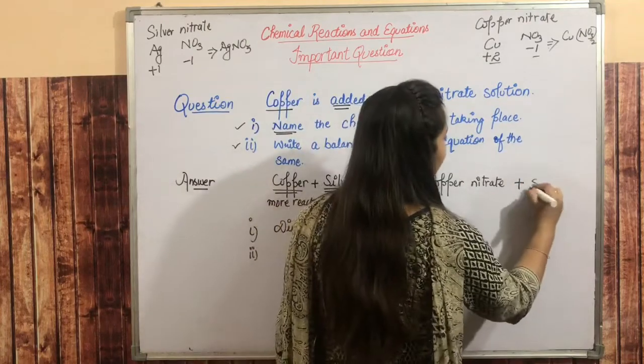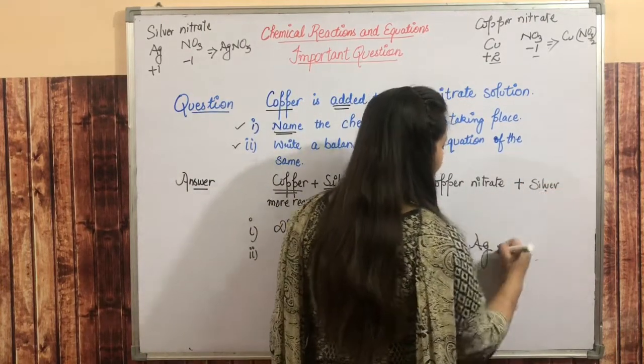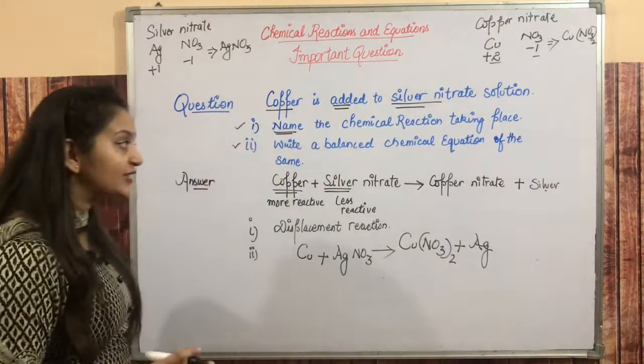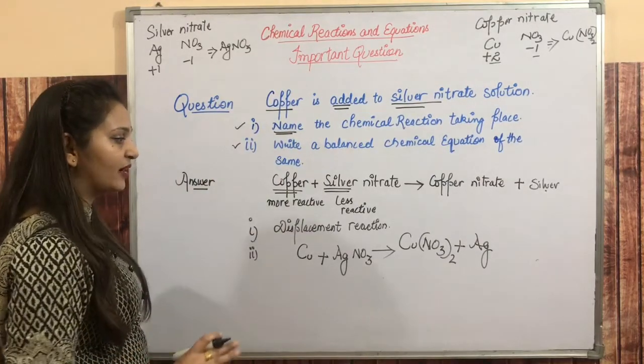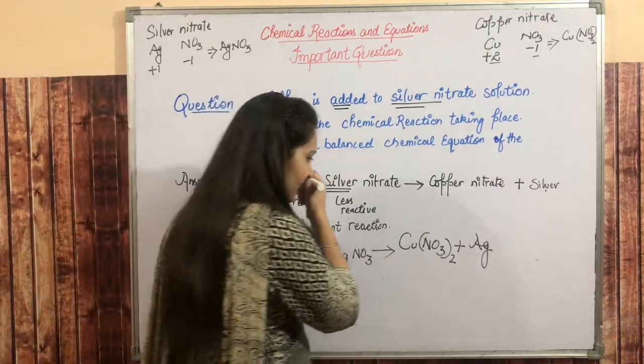So you can write Ag, silver symbol Ag. So this is our chemical equation skeletal. Now we have not balanced.